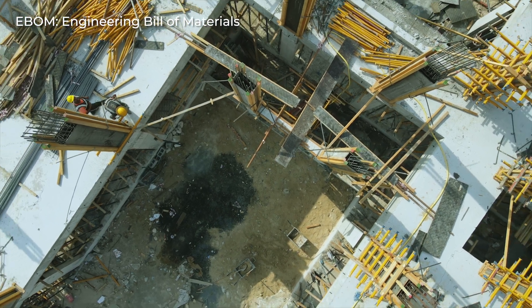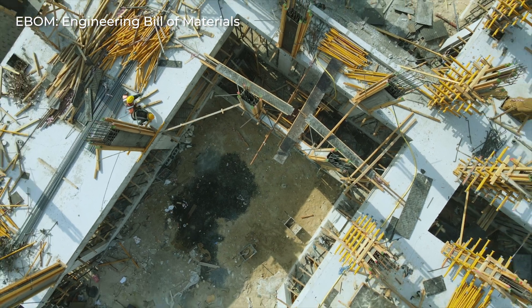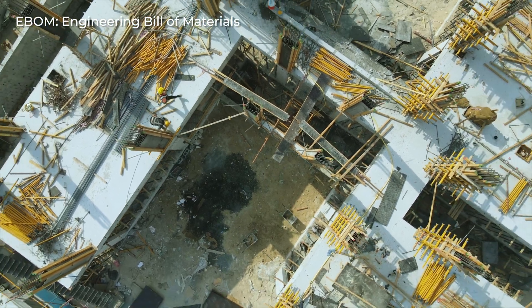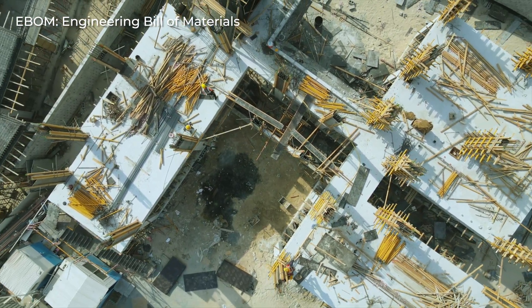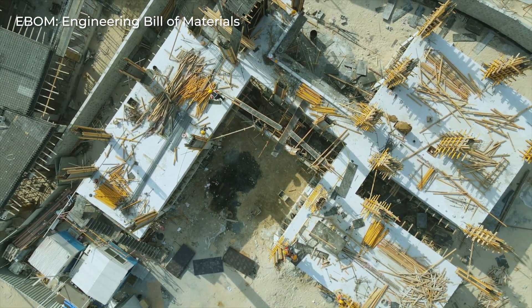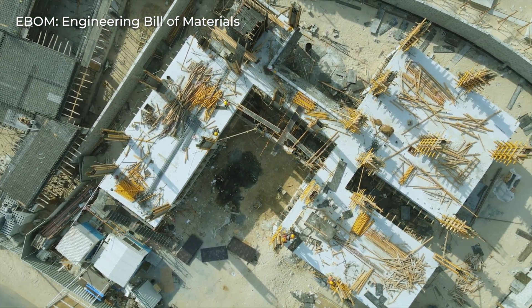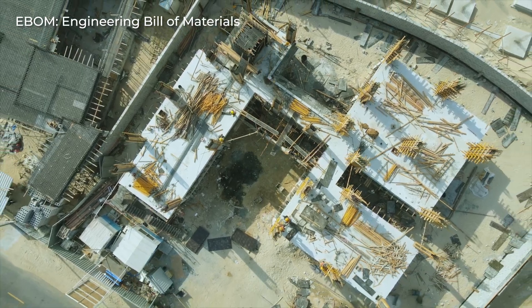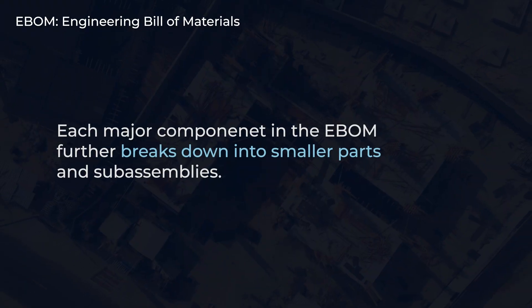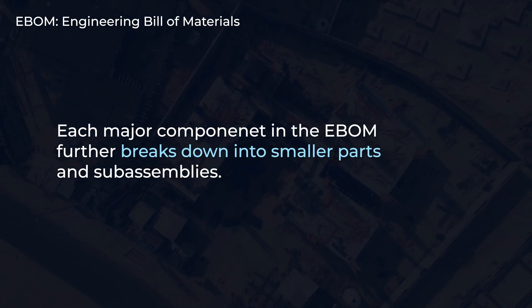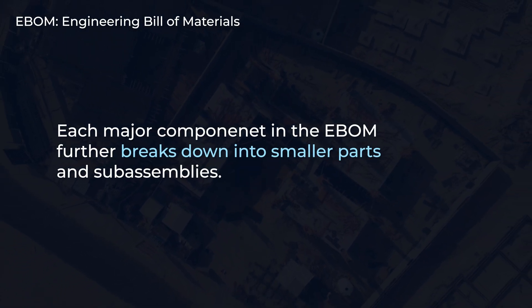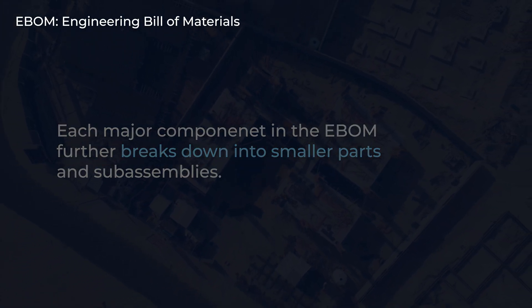It lists all the parts required at a high level, like walls, doors, windows and roof. But just like a house consists of many rooms and intricate details, each major component in the E-BOM further breaks down into smaller parts and sub-assemblies.